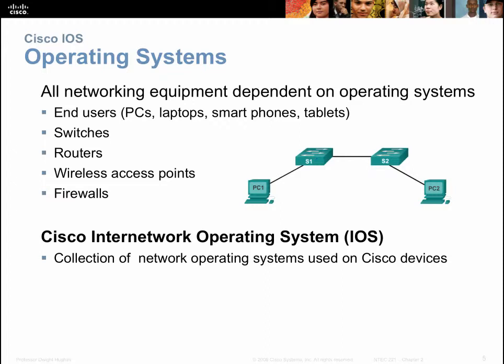Hardware would be keyboards, mice, monitors, things like that. We have different operating systems for different types of things. For end users — PCs, laptops, phones — you have an end user operating system designed to do things for the human being. Specialized devices like switches, routers, wireless access points, and firewalls also have operating systems, but they're designed for internet networking devices to help move traffic to or from their destination.